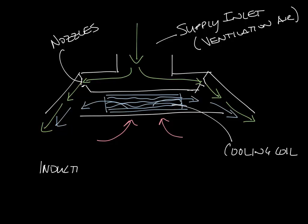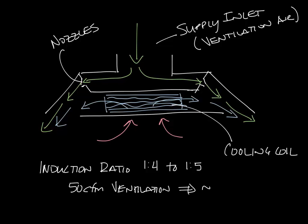A typical induction ratio for a chill beam is about 1 to 4 or 1 to 5. What that means is if you have 50 CFM ventilation air that's inducted to the unit, you'll get somewhere between 200 and 250 CFM of air in your space to handle your cooling load.